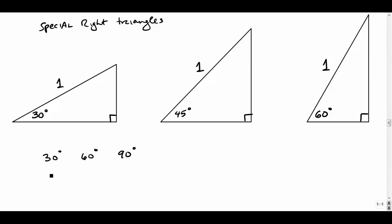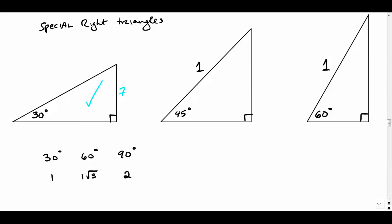The ratio of sides in a 30-60-90 is 1 : radical 3 : 2. For example, if the side across from 30 degrees is 1, then the side across from 60 is radical 3, and the hypotenuse is 2. If the short leg were 7, the longer leg would be 7 times radical 3, and the hypotenuse would be 14. That is how the extended ratio works for a 30-60-90 triangle.